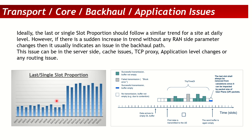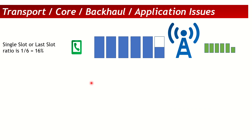If the proportion is following a steady trend and there is a sudden change — an increase — that indicates a problem. If there is a decrease, that actually indicates something has been done better at the core end. So our concern is when the last slot or single slot proportion suddenly increases. Let's try to understand why this indicates an issue at the backhaul.